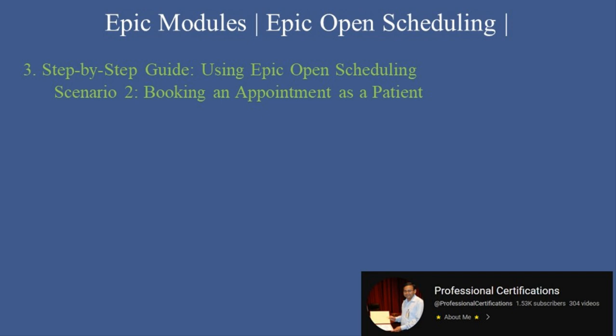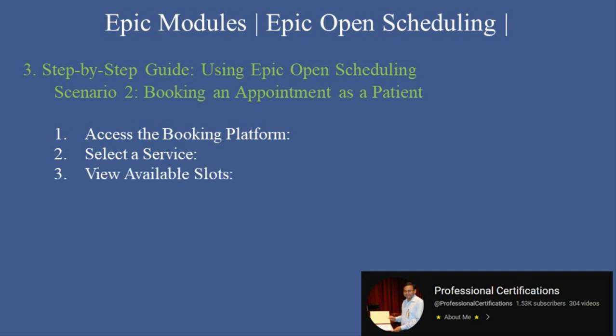Scenario 2 — Booking an appointment as a patient. 1. Access the booking platform: Patients can visit the provider's website or log into MyChart. 2. Select a service: Choose the type of appointment needed, such as a wellness visit or a follow-up. 3. View available slots: Browse open time slots and select the most convenient option. 4. Confirm details: Enter any required information, such as insurance details, and confirm the booking.